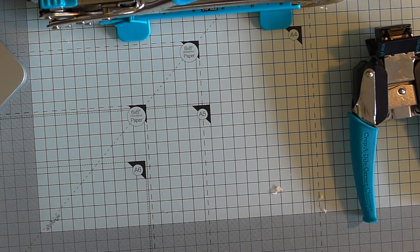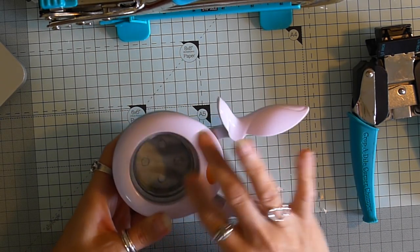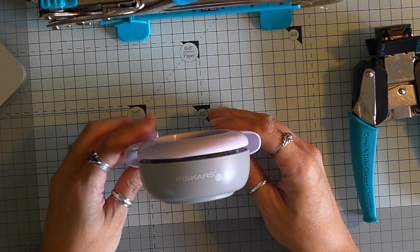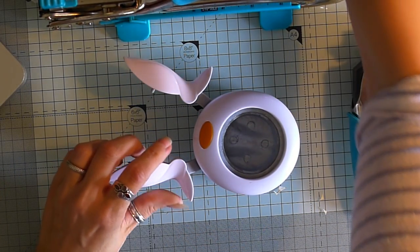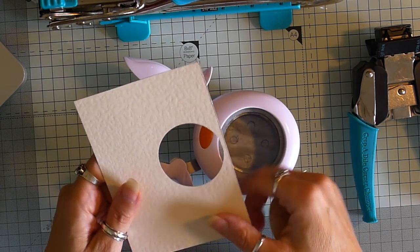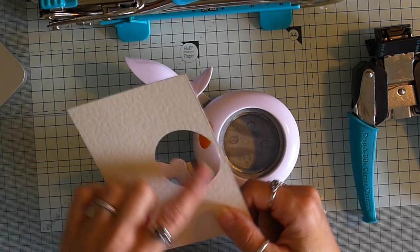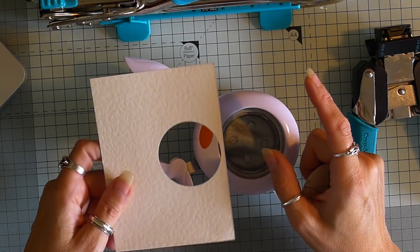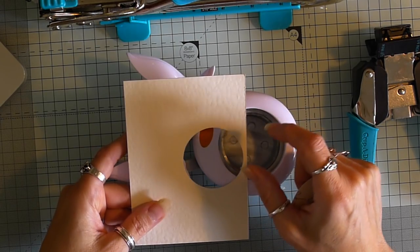My circle punch is a Fiskars. I've been asked about this before. It obviously cuts a perfect circle. The only problem with this is it's not got a lot of reach if you're looking to use the hole. So another tip for you: if I'm wanting to make a circle and have the hole, I bought a set of dies from AliExpress and they were £1.50 and I think there were six circles.